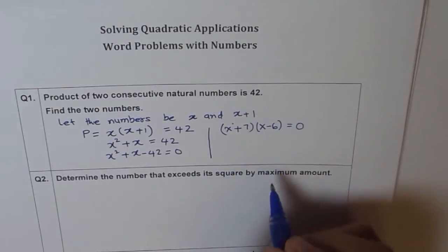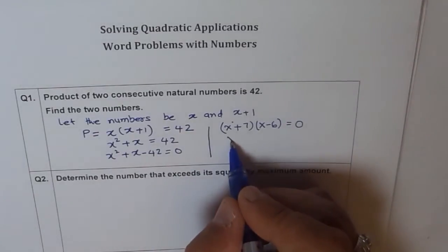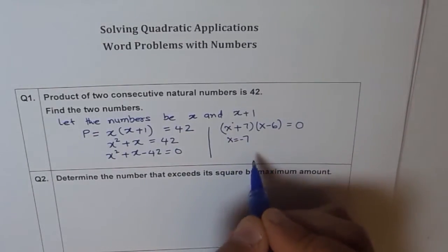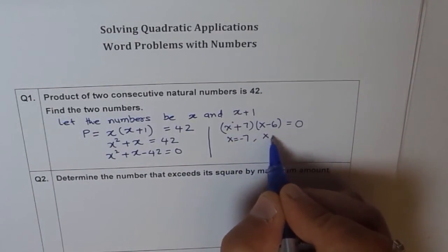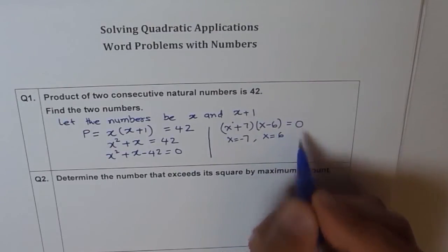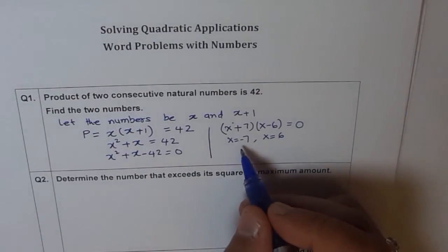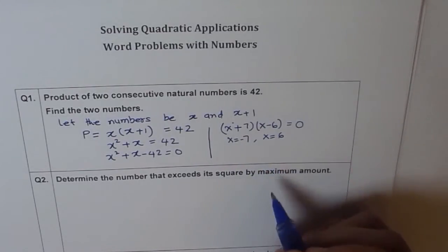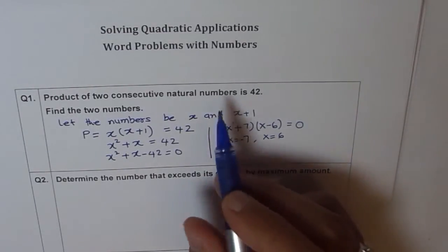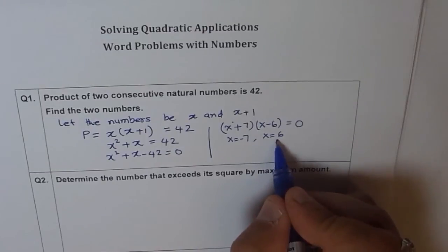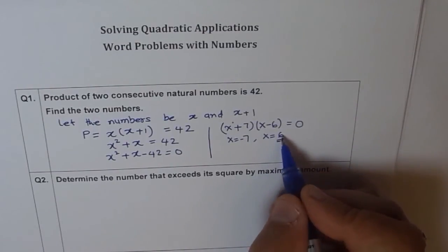And when will these factors be 0? If x equals minus 7, it will be 0. Or if x equals plus 6, then we can get a 0. So therefore, our answer could be either minus 7 or 6. But since the numbers are natural numbers, we have only one option. That is, x is 6.